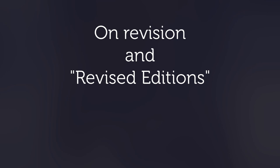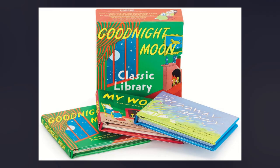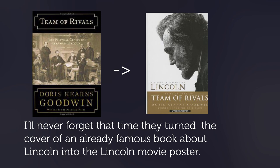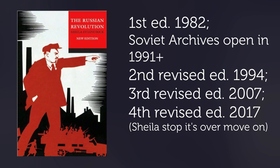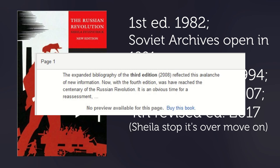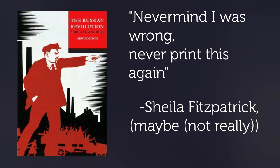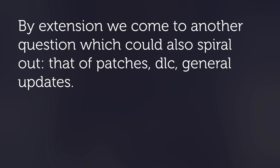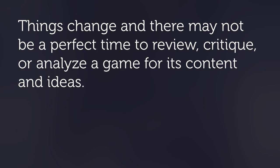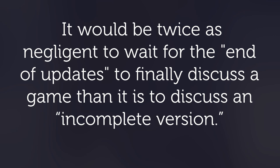Earlier I mentioned Fitzpatrick having a revised edition — let's address that. Books, especially in history, get reprinted as new editions not just to have more copies but with updates to the text. Fitzpatrick's book was updated after 1991 because the original was from 1982 and started in 1979 — before the Soviet archives opened up. The book changed when new information became available. The book didn't say 'never mind, I was wrong,' but there were changes. This leads to another question which circles back to games: patches, DLC, and general updates.